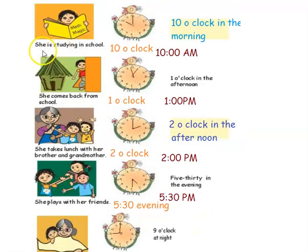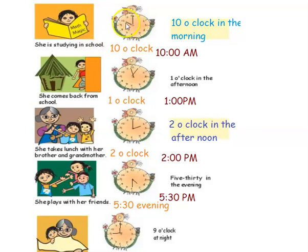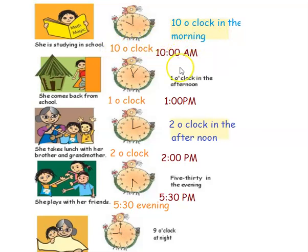The next activity is she is studying in school. The clock shows the hour hand at 10 and the minute hand at 12. So it is 10 o'clock. Since she is in school, it is 10 o'clock in the morning, so we can write it as 10 a.m.